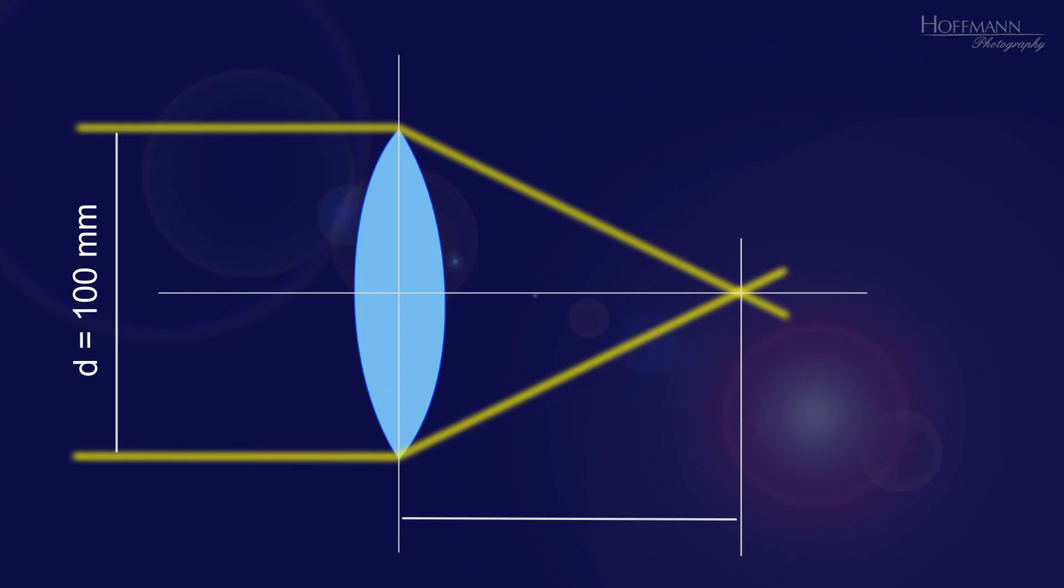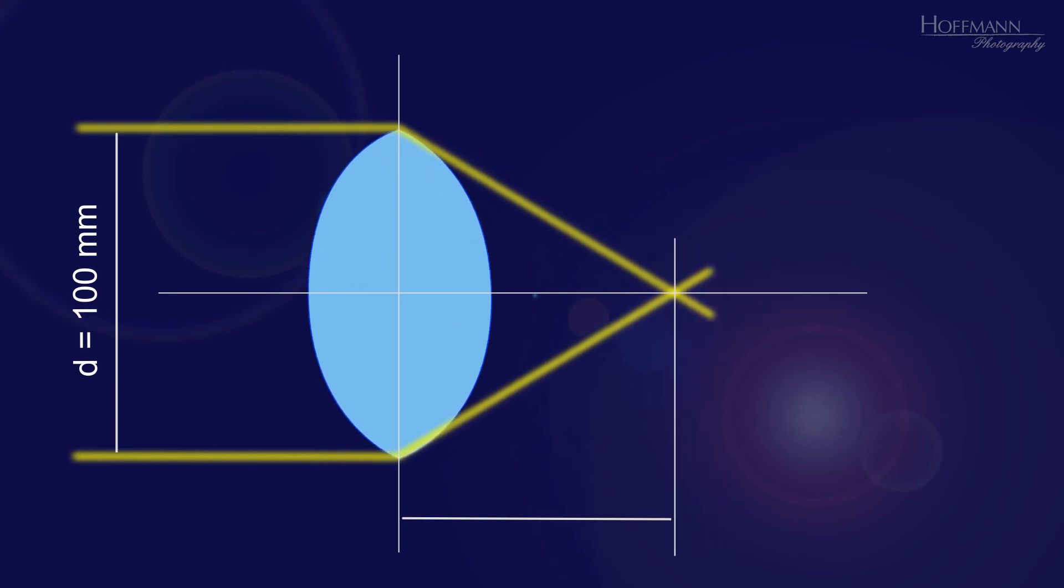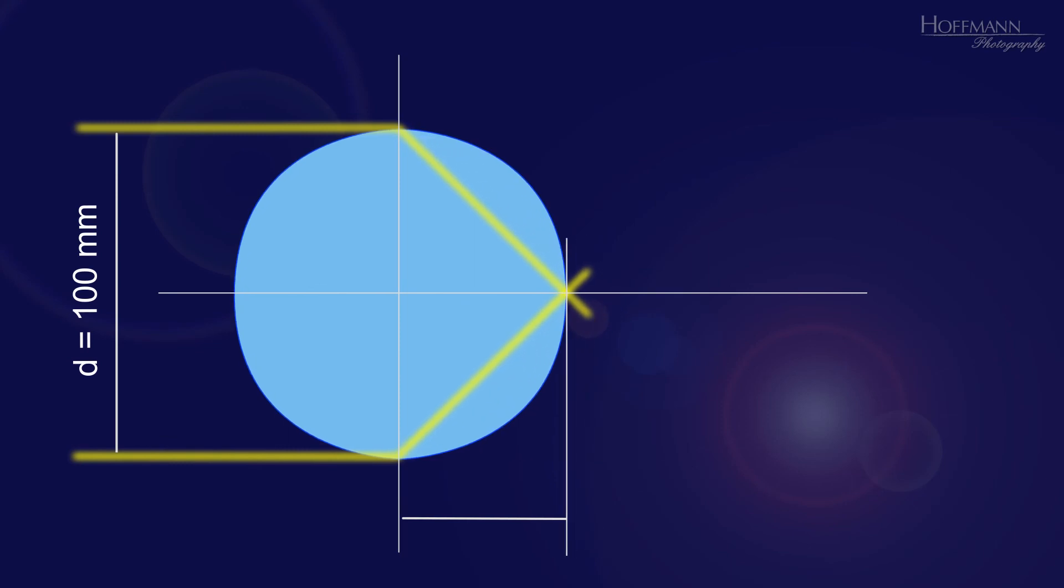The focal length of a convex lens with a fixed diameter becomes shorter and shorter with increasing thickness. The shortest possible focal length is obtained with a spherical lens and corresponds exactly to half the lens diameter. Then the focal point would be exactly on the lens surface. And with the well-known relationship that the f-stop corresponds to the ratio of lens diameter to focal length, we get f0.5. However, you can certainly imagine that a spherical lens is no longer practical. Therefore, f0.5 remains a theoretical value.